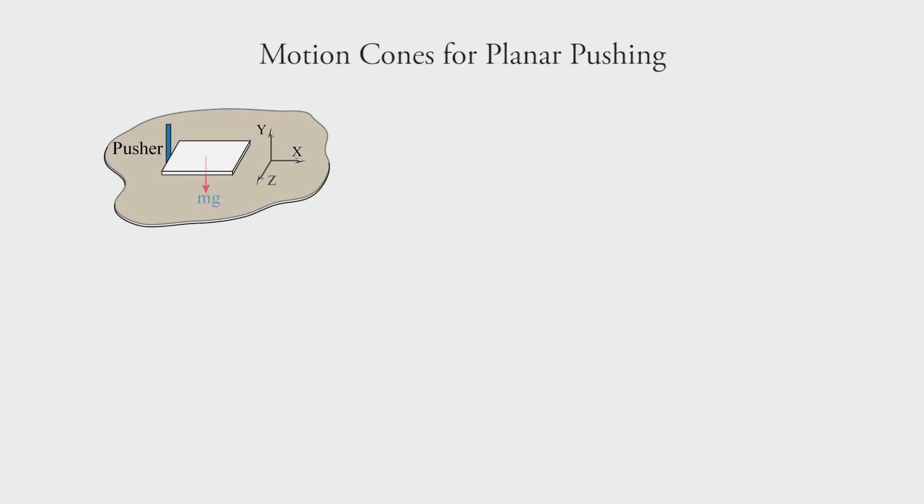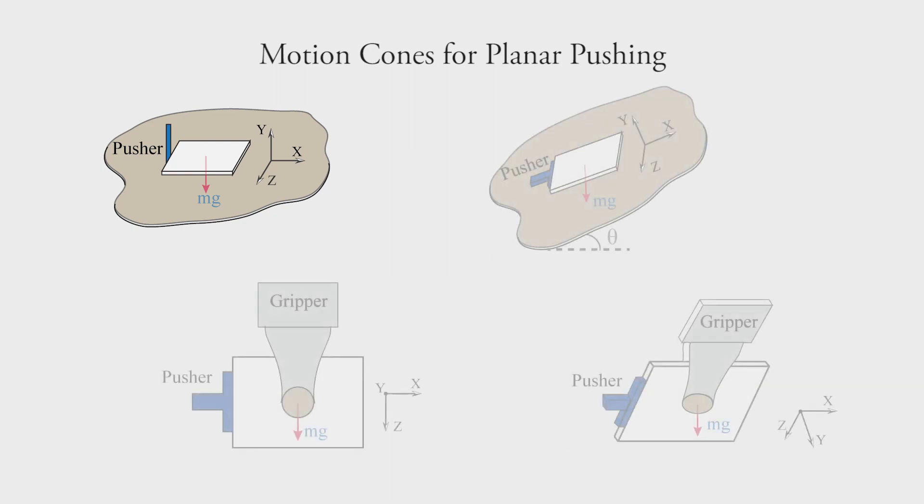A variant of motion cone was introduced by Matt Mason for pushing an object on a horizontal plane with a point pusher. A motion cone is the set of motion twists that a pusher can induce on the object using a friction contact. In our work, we extend this idea to general set of planar pushing tasks where external forces alter the dynamics of pushing and contact interactions can be more complex.